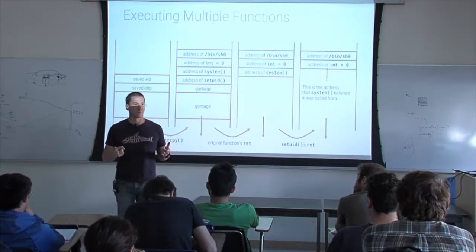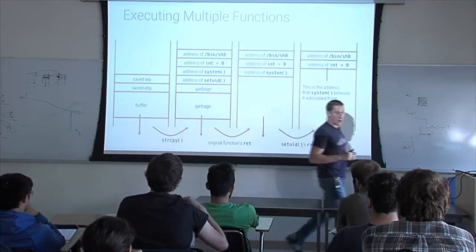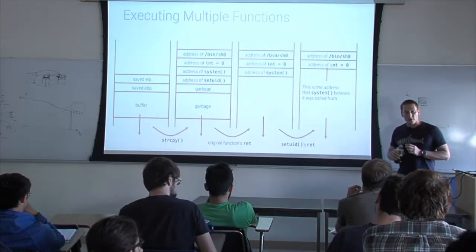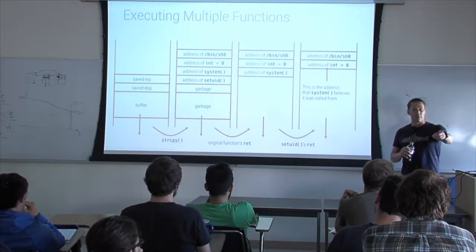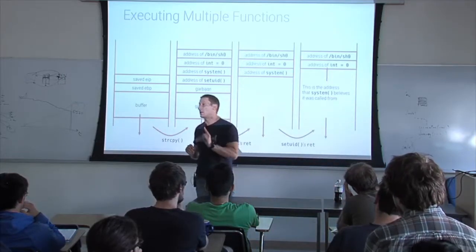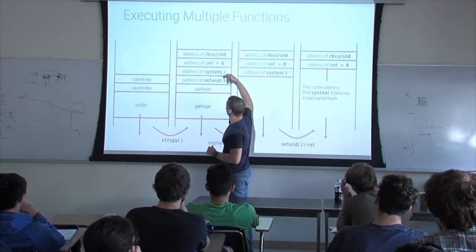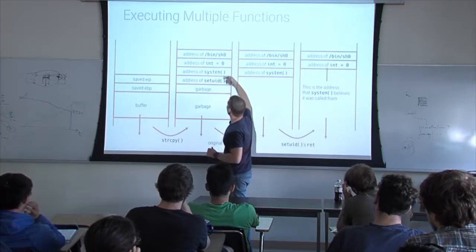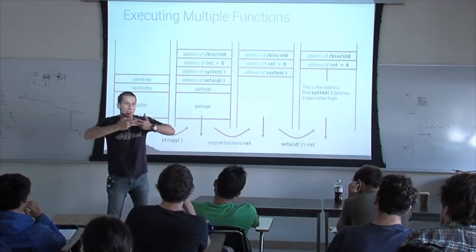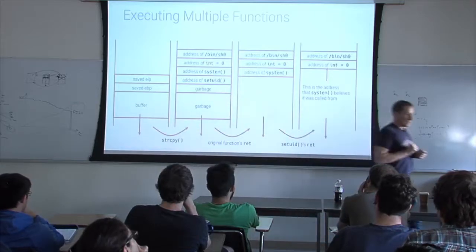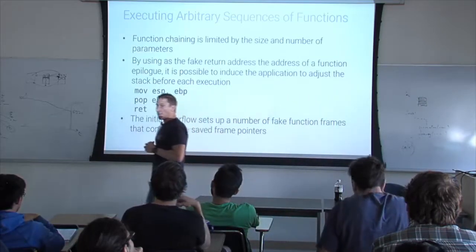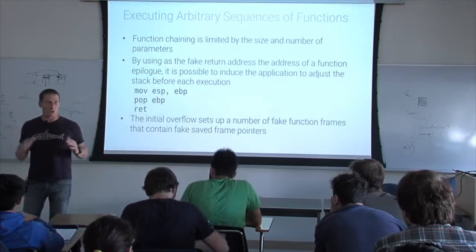The limitation is that these functions work fine because they have one parameter. If setUID had three parameters, they would expect them to be there, interfering with the interleaving of setUID and system. So the next step is to execute arbitrary functions with arbitrary parameters in return-to-libc, by returning after every execution into the epilogue of another place in libc, so that executing the epilogue with a particular EBP adjusts the stack the way we want.